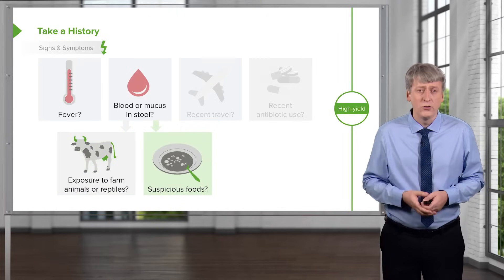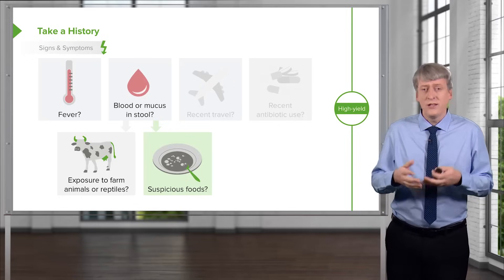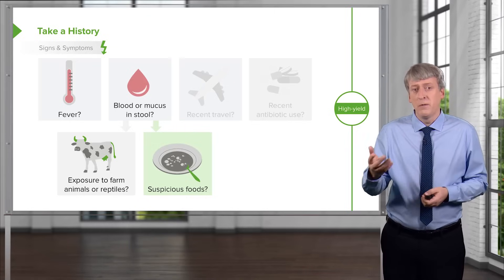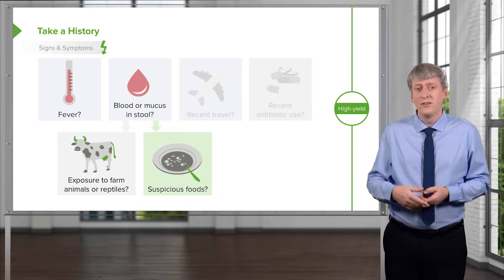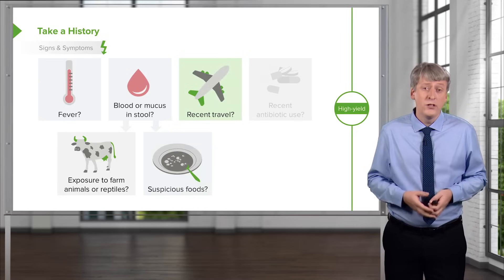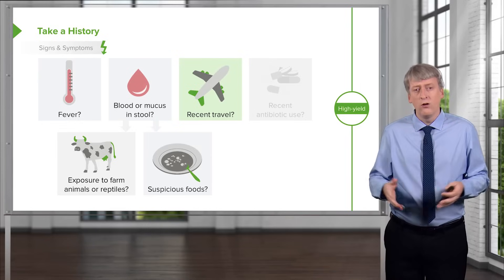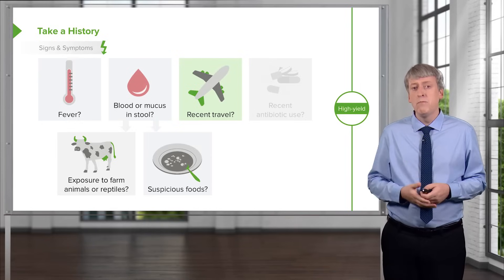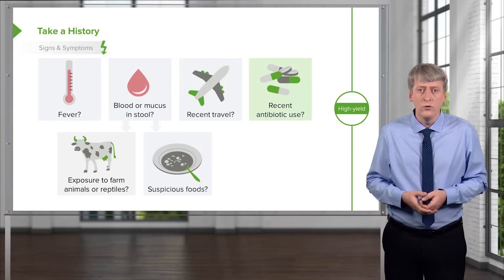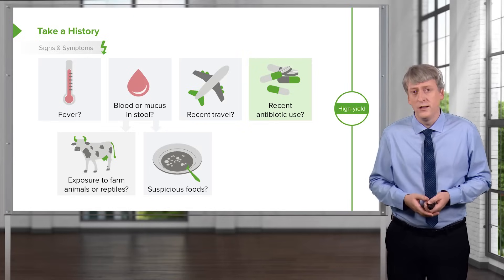Ask about suspicious foods — for example, E. coli and spinach outbreaks happen periodically — as well as undercooked foods, like uncooked eggs which might show up in raw cookie dough. Ask about recent travel, as some causes of diarrhea unusual in the United States may be more prevalent in developing countries. And of course ask about recent antibiotic use, because C. diff is a possibility as well as antibiotic-associated diarrhea.